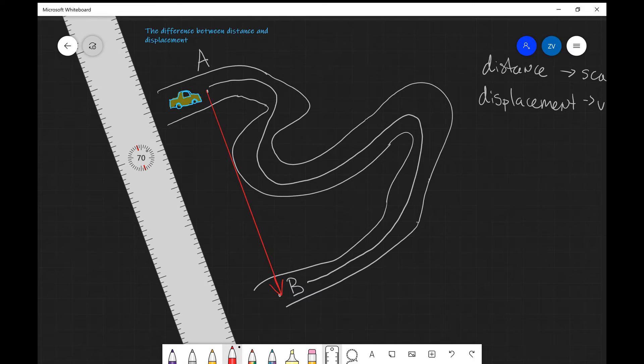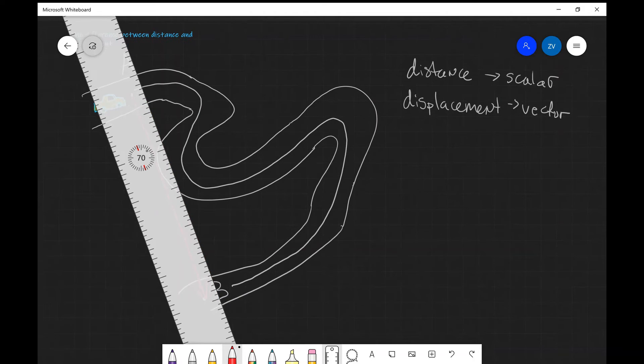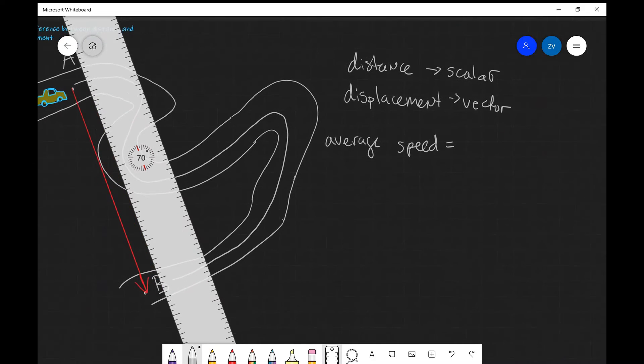We can use the distance and the displacement to actually define average velocity and average speed. So we can say for example that average speed which is a scalar quantity is equal to the total distance traveled divided by the time.